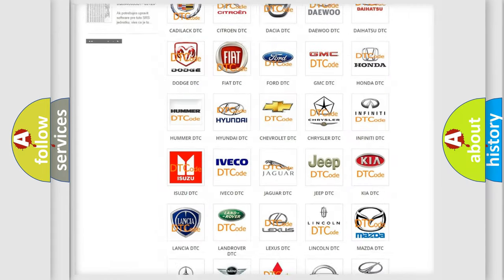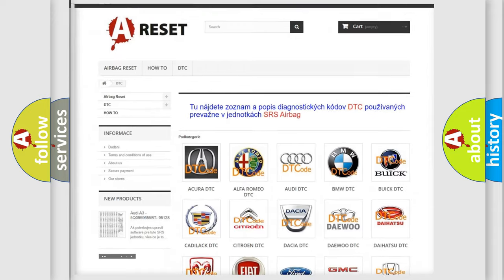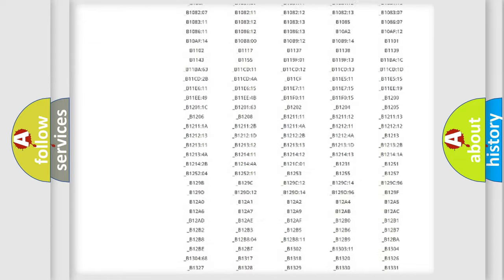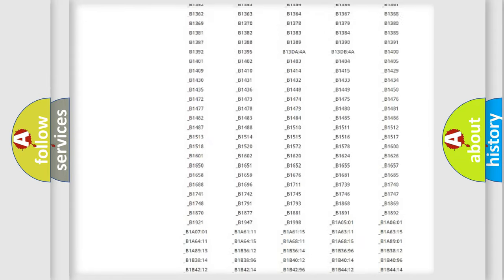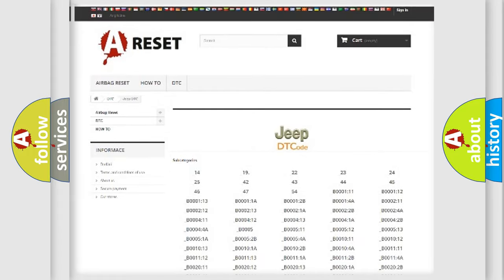Our website airbagreset.sk produces useful videos for you. You do not have to go through the OBD2 protocol anymore to know how to troubleshoot any car breakdown. You will find all the diagnostic codes that can be diagnosed in Jeep vehicles, and also many other useful things.